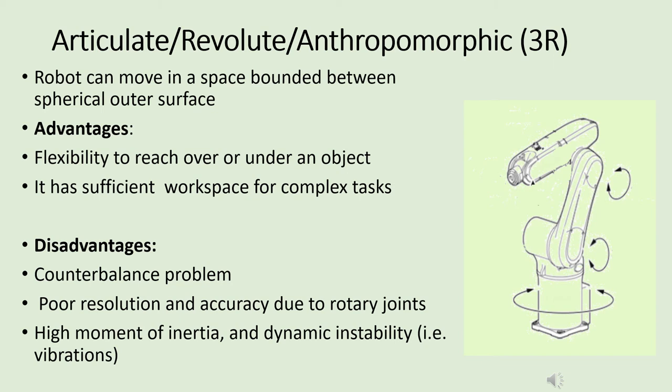In the case of articulated robots, all the joints of the robot are revolute joints. The robot can move in a space bounded between a spherical outer surface. The flexibility to reach over and under objects can be achieved using a revolute or articulated type of robot, and it has sufficient workspace for complex tasks. Disadvantages include a counterbalance problem, poor resolution and accuracy due to large rotary joints, and moment of inertia and dynamic instability.